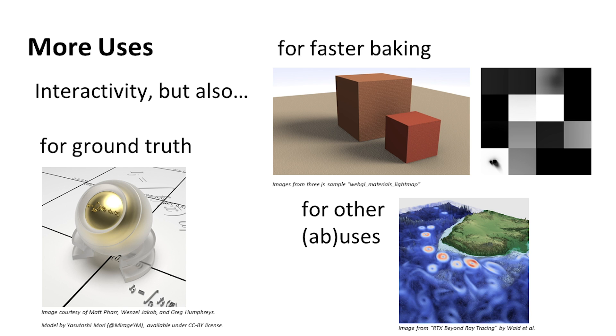The other cool thing you can do with ray tracing hardware is that you can abuse it. In other words, we're now looking into researching ideas of what else we can do with this. Could we do collision detection, or could we do volume rendering, or could we do other kinds of queries? Work is just starting on this, and I think it's a really interesting open field where there are all kinds of possible ways we can use and abuse the new hardware. And that's it for this talk.